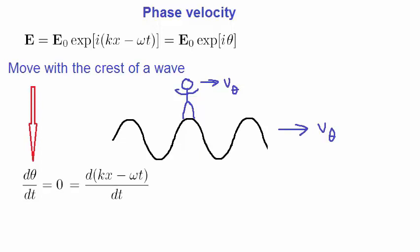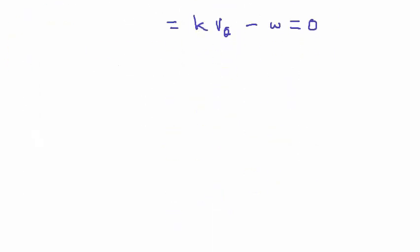Now substitute back the expression for θ and carry out this derivative. It simplifies to this. Rearranging this expression gives us the velocity of the wave in terms of ω and k. This velocity is known as the phase velocity.